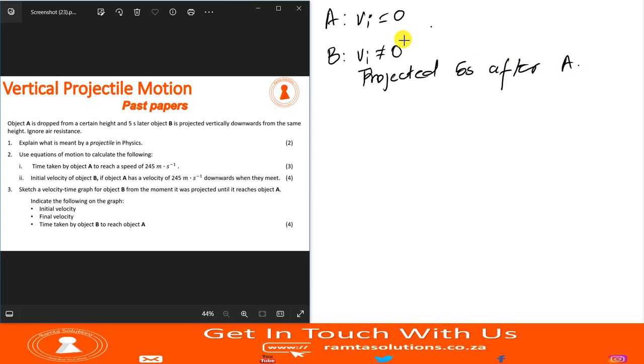This one was projected vertically downwards, so this means there was a force in it. In other words, this is why our initial velocity for object B is not zero.